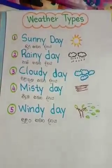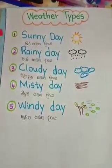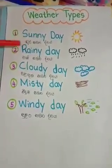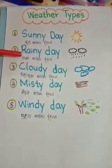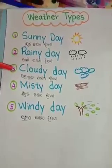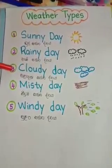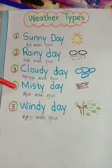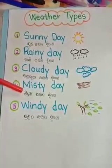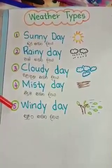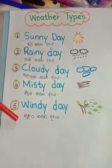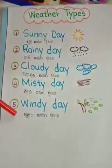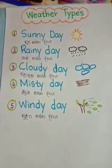Check my notes, kids. Number one: sunny day - ira sahita dineya. Number two: rainy day - vasi sahita dineya. Number three: cloudy day - wala akulu sahita dineya. Number four: misty day - meeduma sahita dineya. Number five: windy day - sulang sahita dineya. I have five pictures and I will send them to your phones soon.